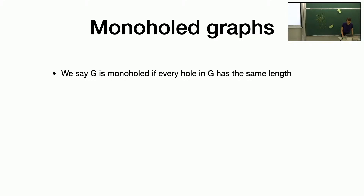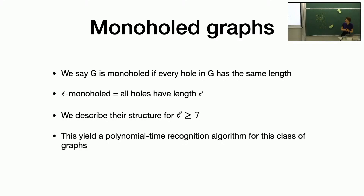Now I'm going to very quickly talk about the second result — I also don't like talking about this result very much. Monoholed means all holes have the same length. We get a structural description of them, which yields a polynomial-time recognition algorithm for this class of graphs. The particular polynomial is n^7, but I didn't want to put it on my slide because we're still writing that part up.